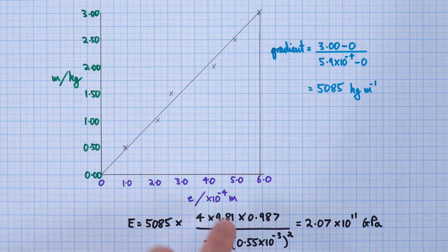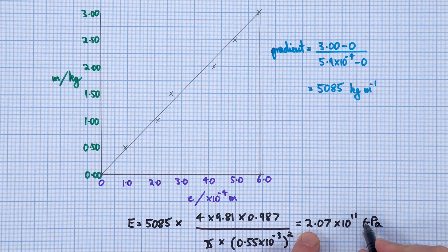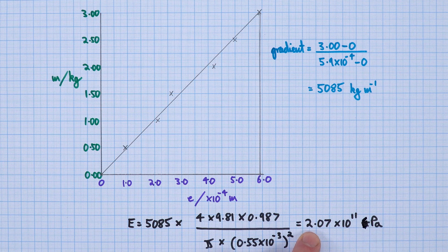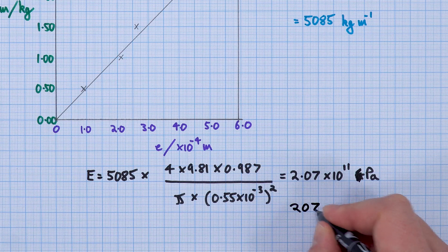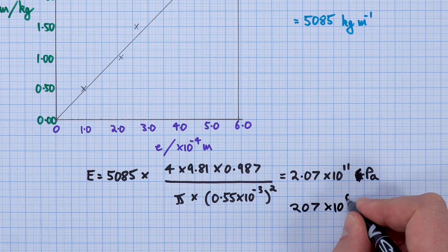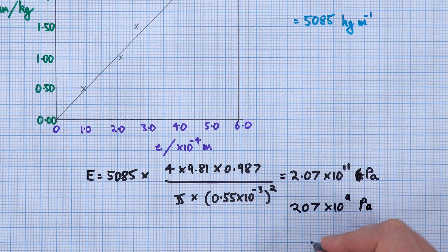When I plotted it like this and put the numbers in, I found that this was actually 2.07 times 10 to the 11 pascals, which is the same as 207 times 10 to the 9 pascals.